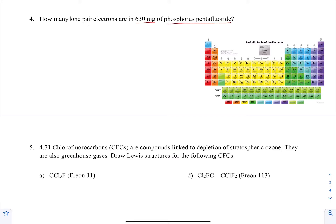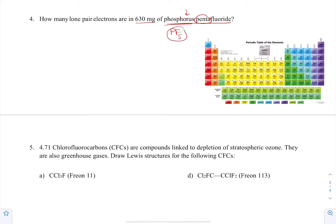So this is covalent naming, and covalent naming uses a lot of prefixes, like penta. All you have to know is that this is going to be P, F, and then penta is five — like pentagon. So PF5, that's the chemical formula. Now they want to know, based on the Lewis structure, how many lone pair electrons would there be if there were 630 milligrams of this stuff?